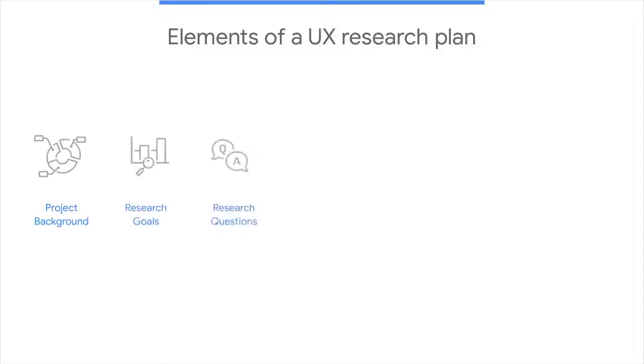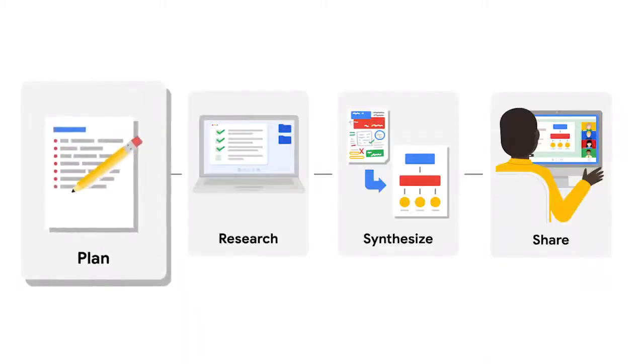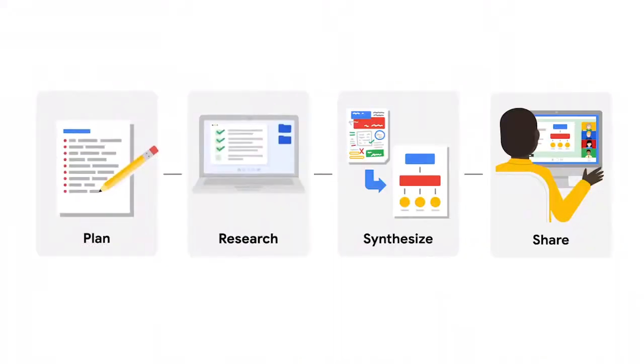Great job. You're making your way through this course and the steps of a UX research study. To begin, you learned about the four steps in a UX research study. Then you dove deep into the first step, planning a study, exploring all seven elements of a UX research plan — the project background, research goals, research questions, KPIs, methodology, participants, and script. Lastly, you investigated why and how to include data privacy in user research. Coming up, we'll move from the first step of planning a research study to the second step, conducting the research. We'll dig into one popular method: usability studies.